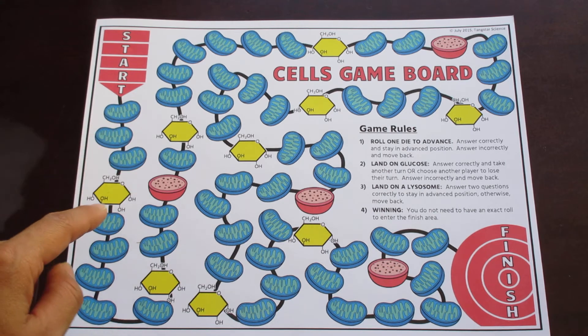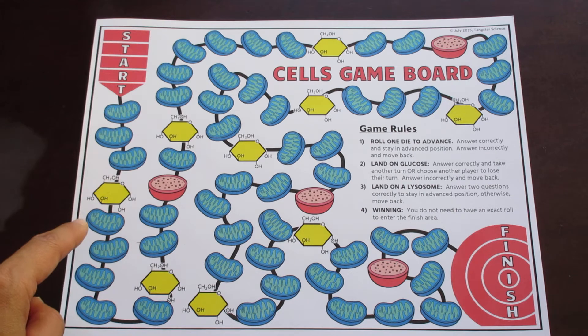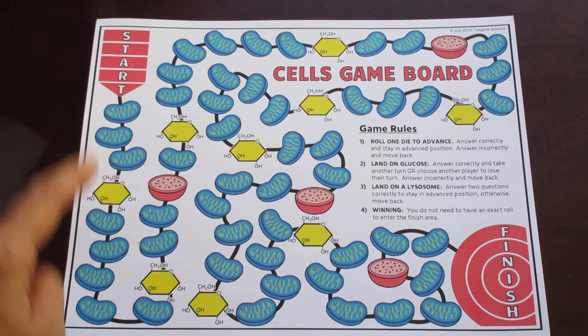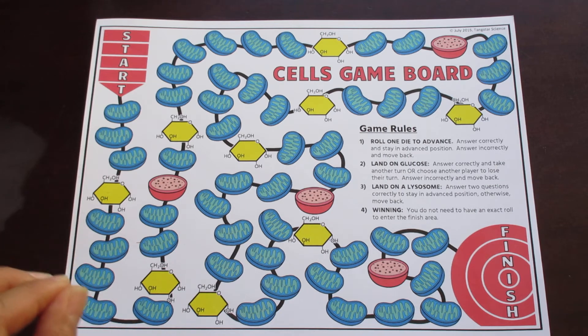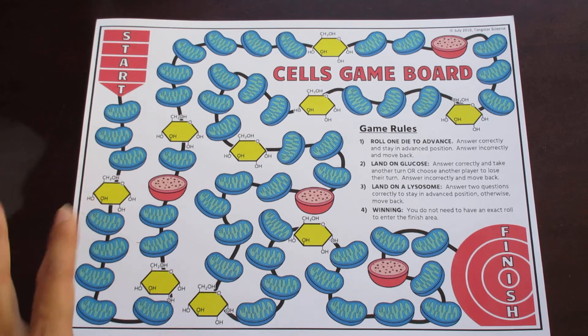I've provided glucose molecules along the way, so that if they land on a glucose molecule and they answer correctly, they can then take another turn or they can choose another player to lose their turn. If they answer incorrectly, they move back.